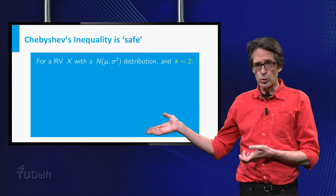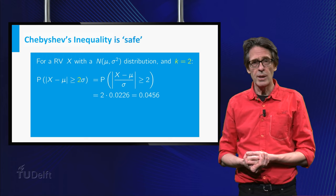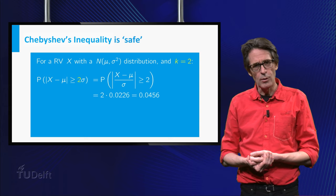by standardizing we find that the probability that X deviates more than 2σ from μ equals 0.0456.